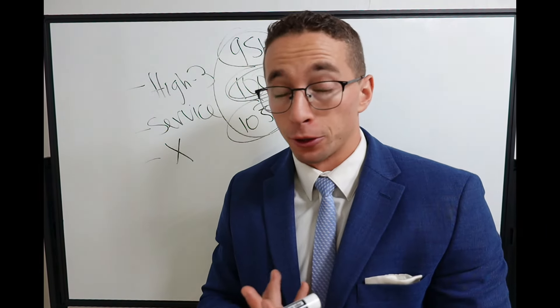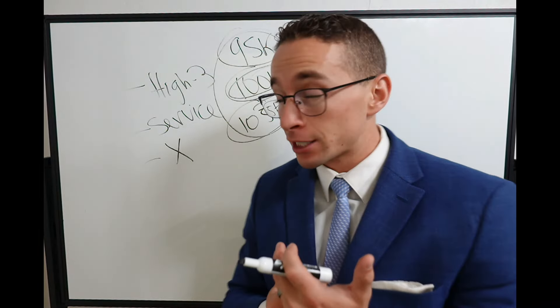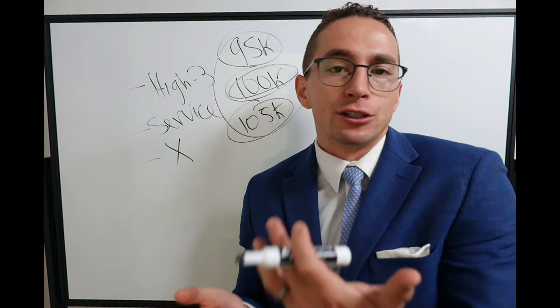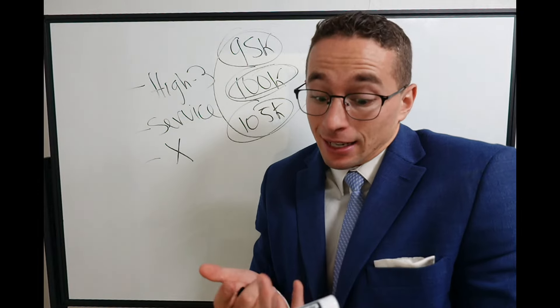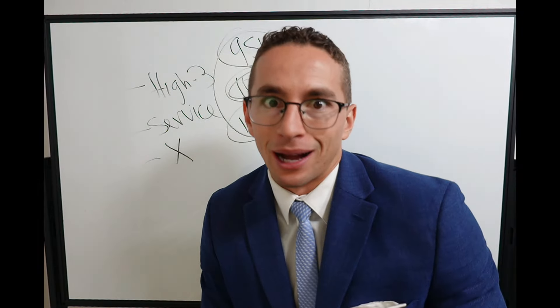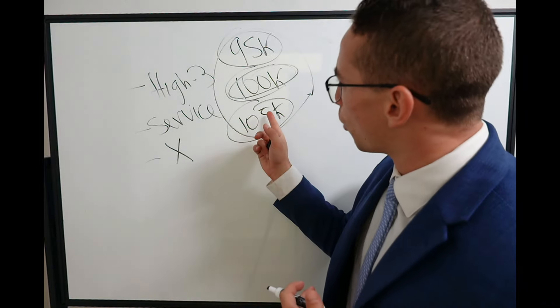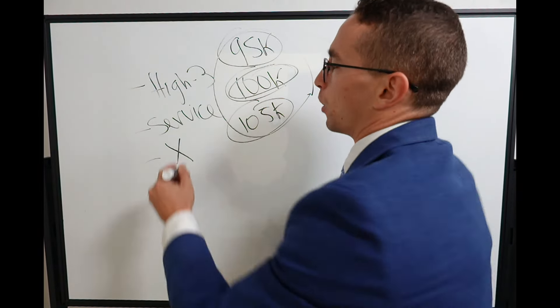So when you're looking at your HR's annuity estimate or pension estimate, look at the high three they're assuming. I've seen so many times that they assume a high three that's simply probably not going to be right. It's probably going to be too high or too low. You want to make sure you understand how that works.